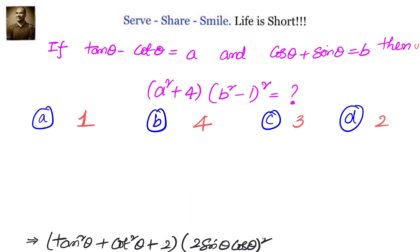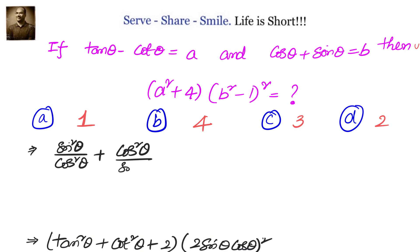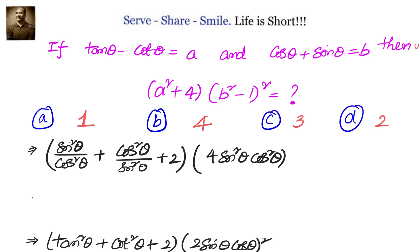In the next step, let us change them into sine and cos. We will write down tan²θ as sin²θ divided by cos²θ, plus cos²θ divided by sin²θ, plus 2 multiplied with 4·sin²θ·cos²θ. Let us take an LCM now.